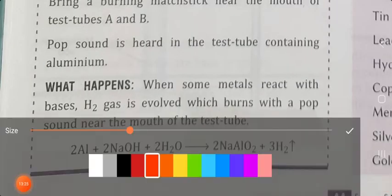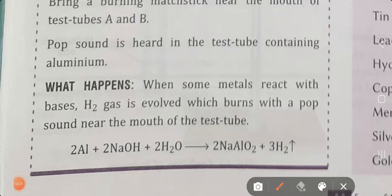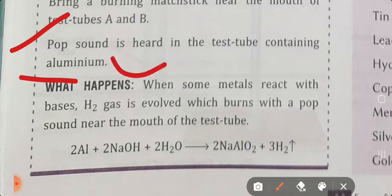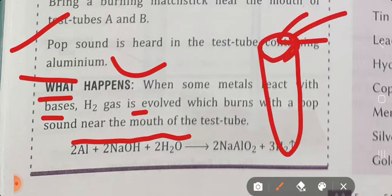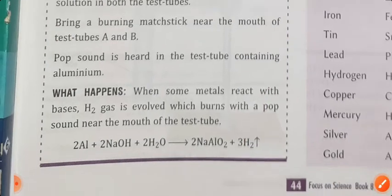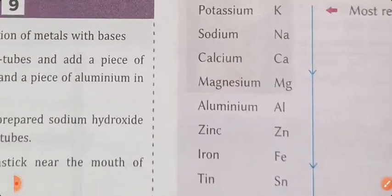So students, what we understand from this is - when the pop sound is created, it will come from the test tube in which aluminium was added. So what happens when some metals react with bases? H₂ gas is evolved, which gives a pop sound near the mouth of the test tube. This is what the practical task demonstrates.